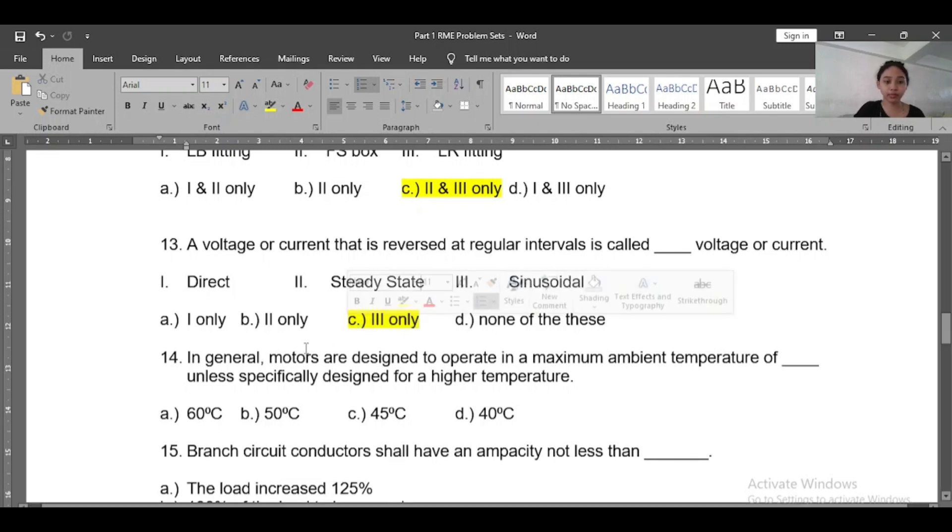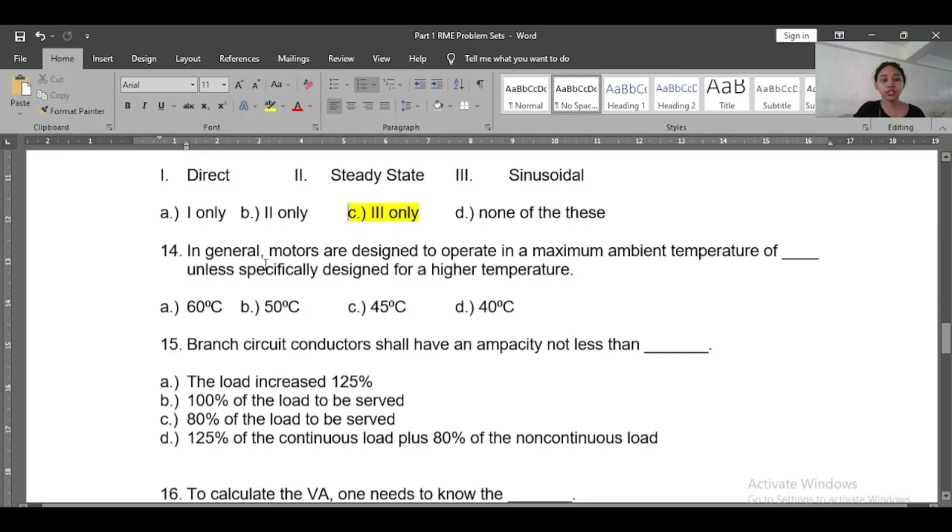Number fourteen: In general, motors are designed to operate in a maximum ambient temperature of blank unless specifically designed for a higher temperature. So this will be 40 degrees Celsius. So the motors are designed to operate in a maximum ambient temperature of 40 degrees Celsius.